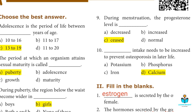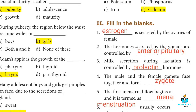Tenth: Intake of this needs to be increased to prevent osteoporosis in later life. Answer D: Calcium. Also, this hormone is secreted by the ovaries of females. Answer D: Oestrogen.